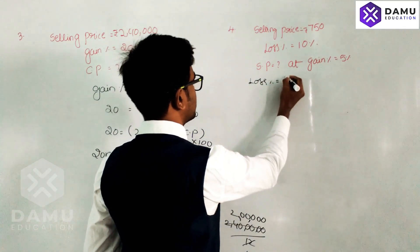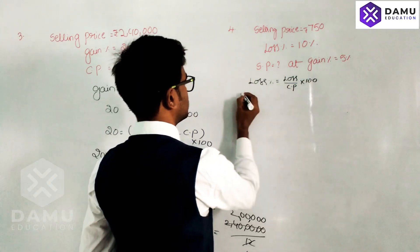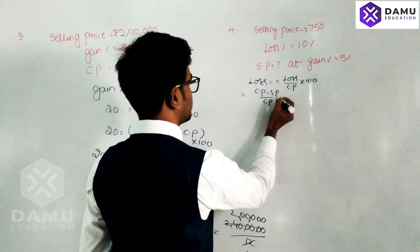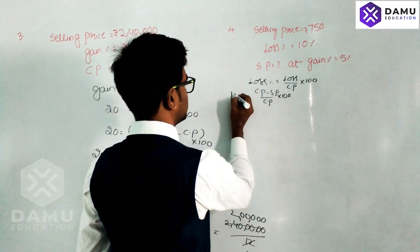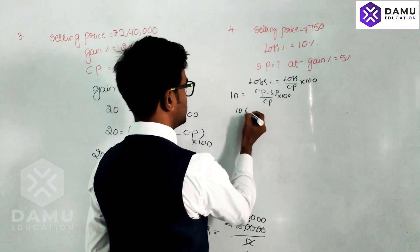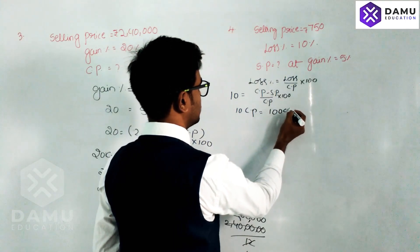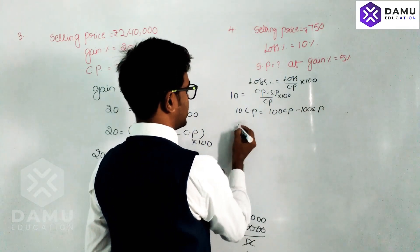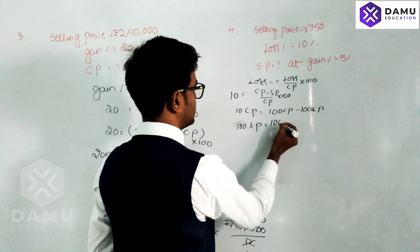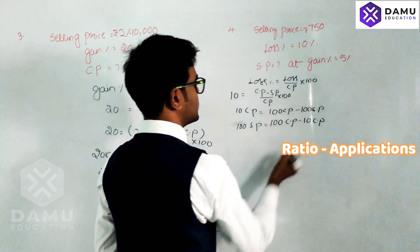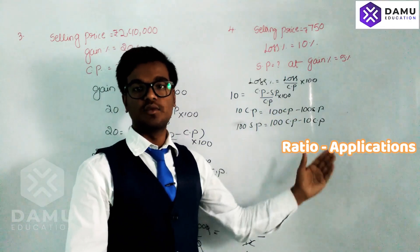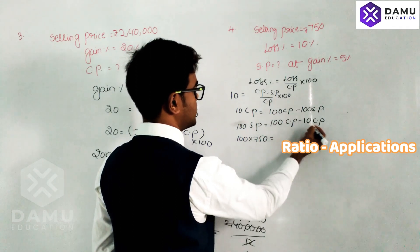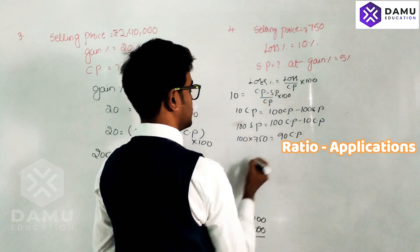Loss percentage equals loss divided by cost price, multiplied by 100. Loss equals cost price minus selling price. So: loss percentage = (CP minus SP) / CP × 100. That gives us 10 into CP equals 100 CP minus 100 SP. Shifting values: 100 SP equals 100 CP minus 10 CP, which is 90 CP.